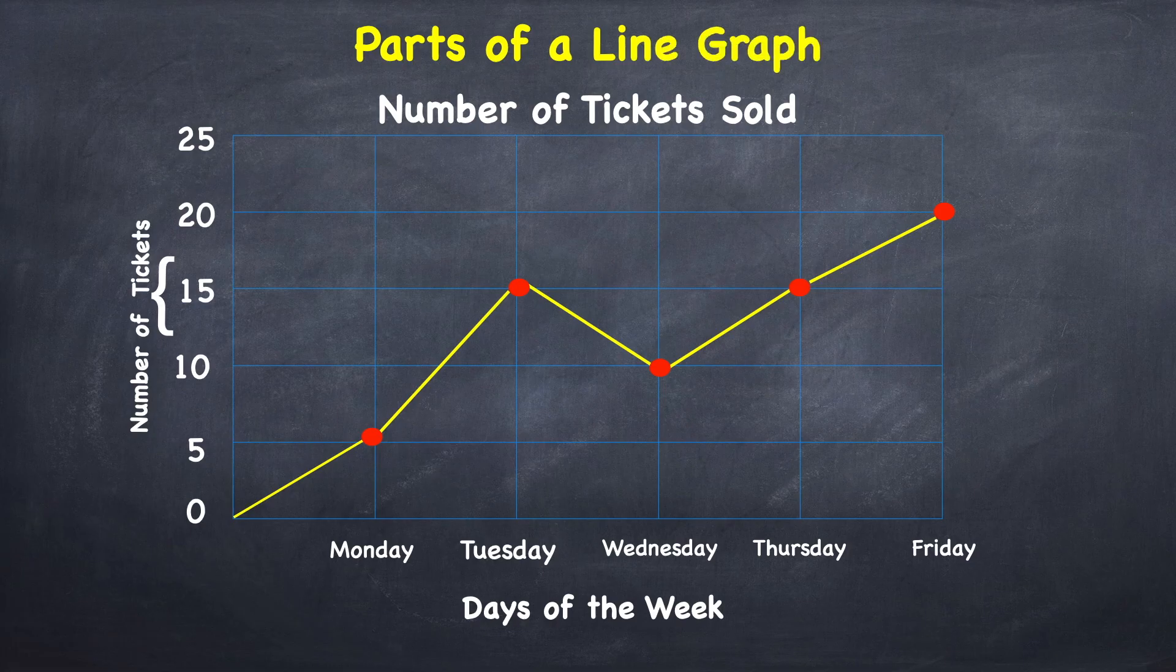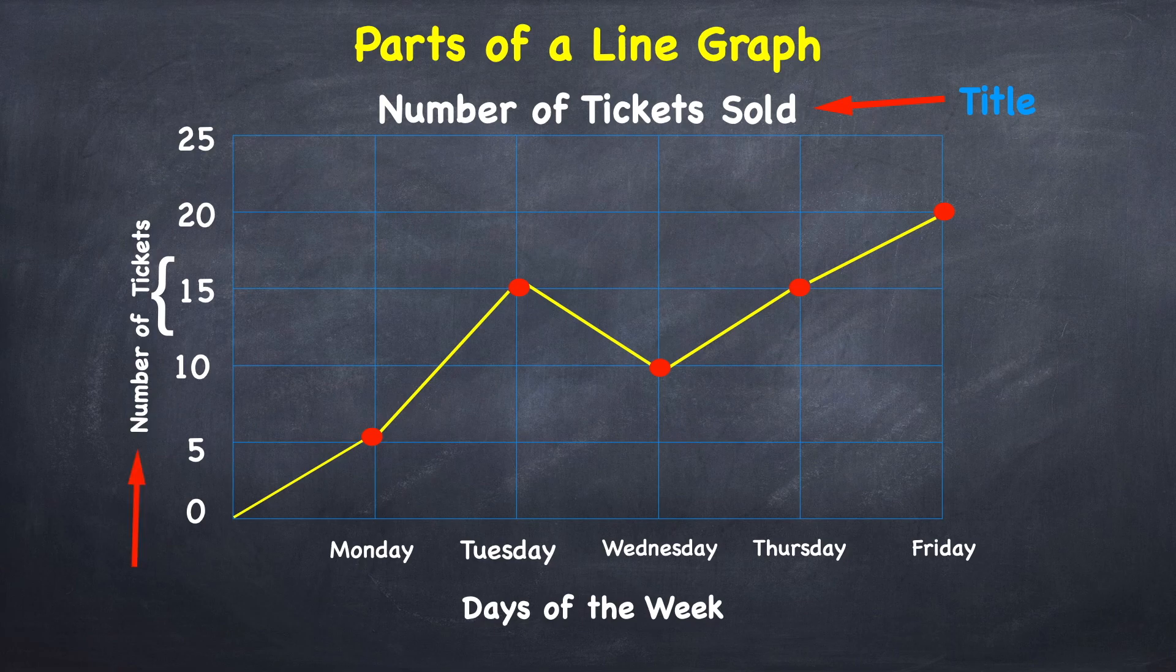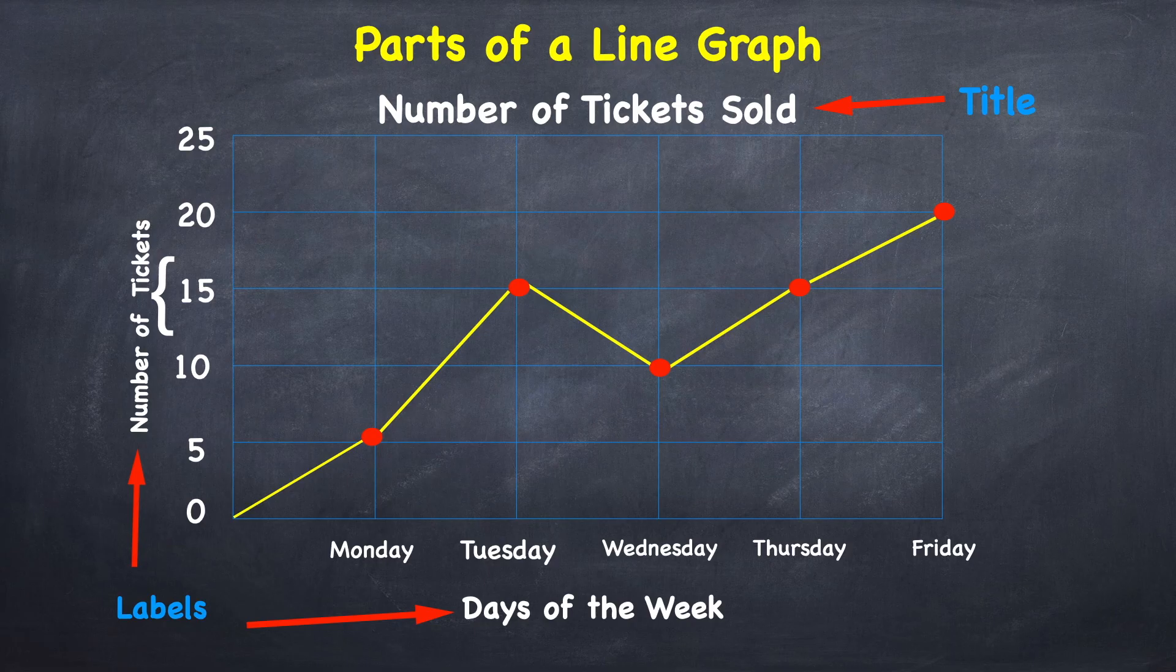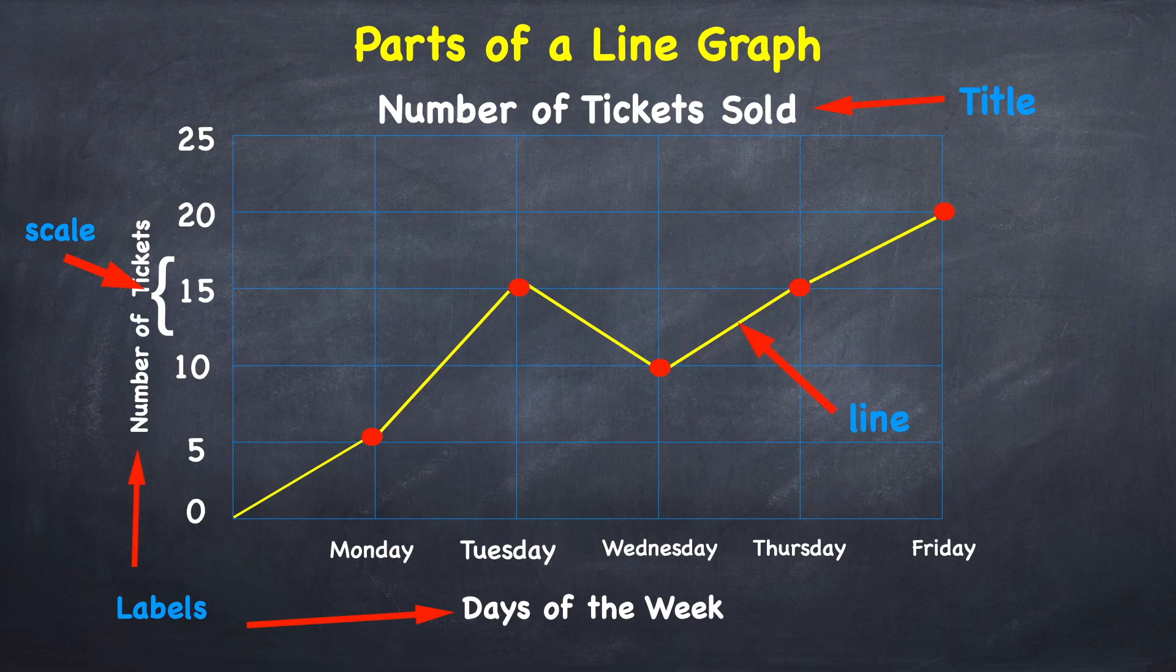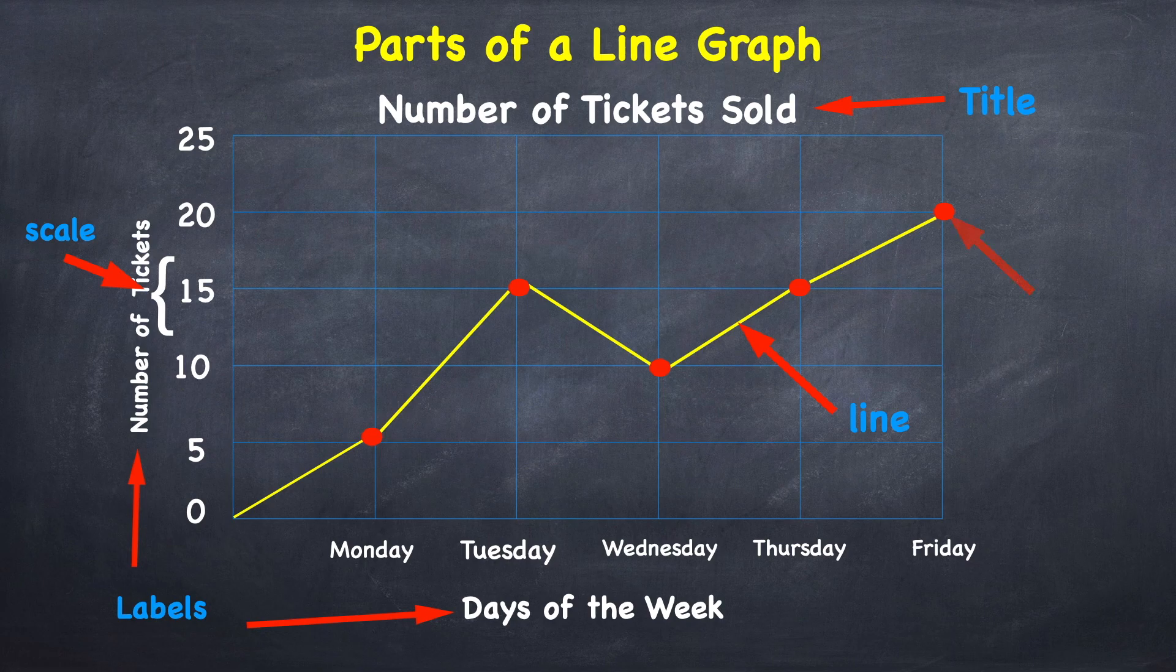Parts of a line graph: Title, Labels, Scale, Line, Point.